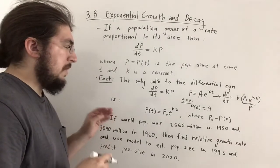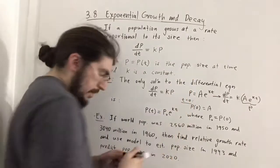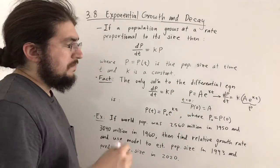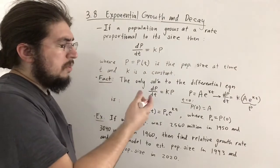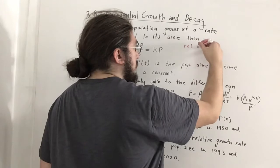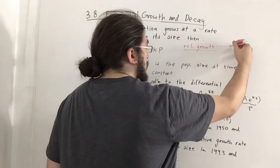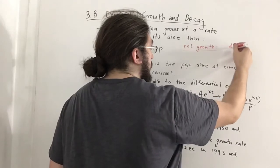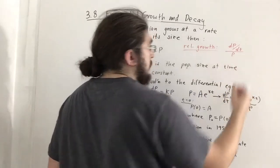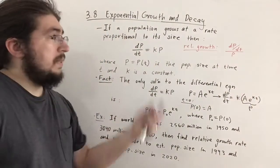The last thing I want to talk about before the example is relative growth. Relative growth is just the rate divided by the size — so dP/dt divided by P. It's literally the rate divided by the size.